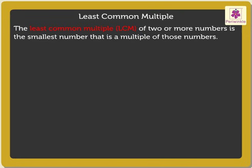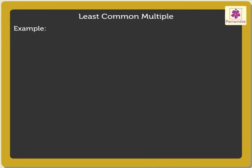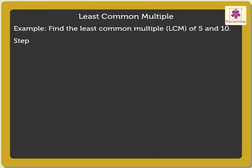To understand it in a better way, let us solve an example. Find the least common multiple of 5 and 10. We will follow a three-step process to find the least common multiple. Step 1: List the multiples of all the given numbers.